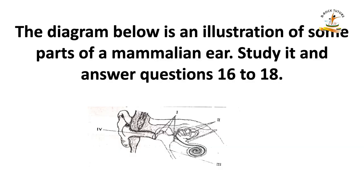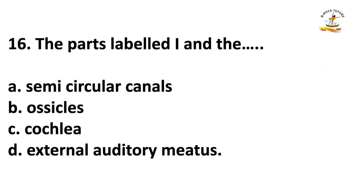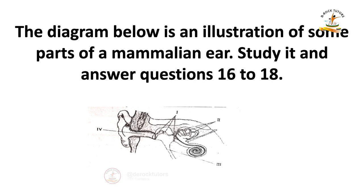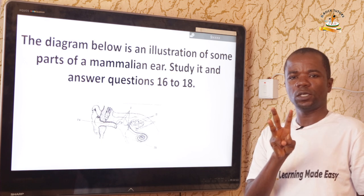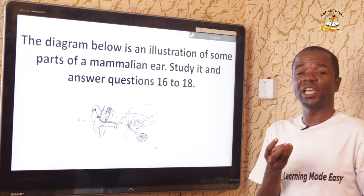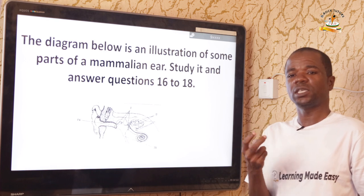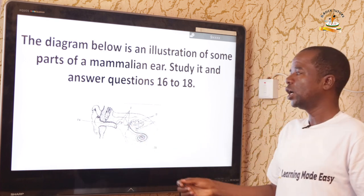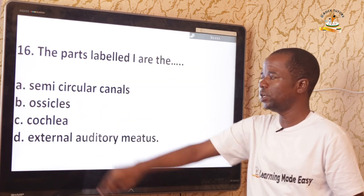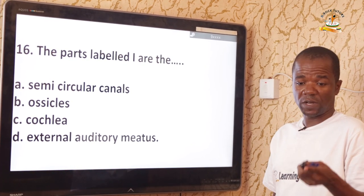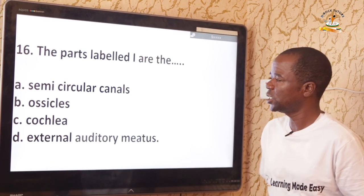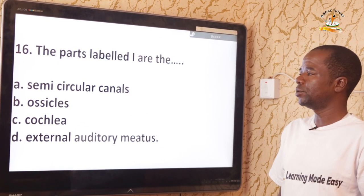Questions 16 to 18 use a diagram of parts of a mammalian ear. Question 16: The parts labeled one are the ear ossicles. There are three ossicles: the malleus (also called the hammer), the incus (also called the anvil), and the stapes (also called the stirrup). The stapes is the smallest of the three, and indeed the smallest bones in the body. The correct answer is option B — ear ossicles.